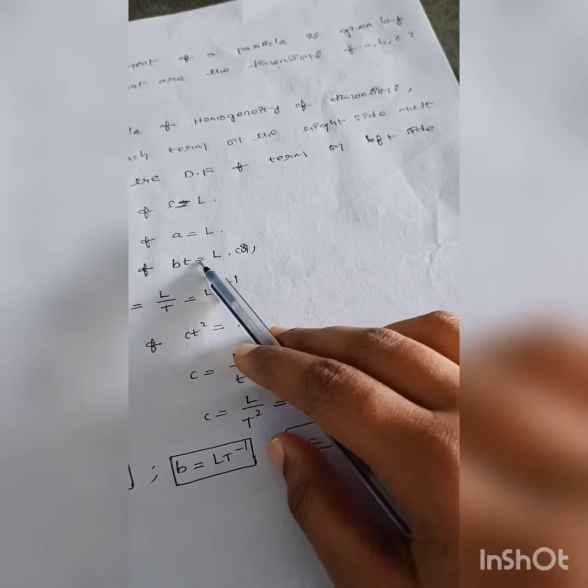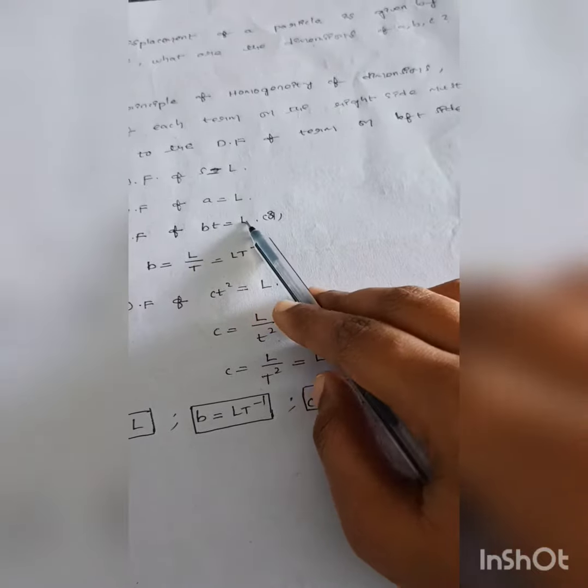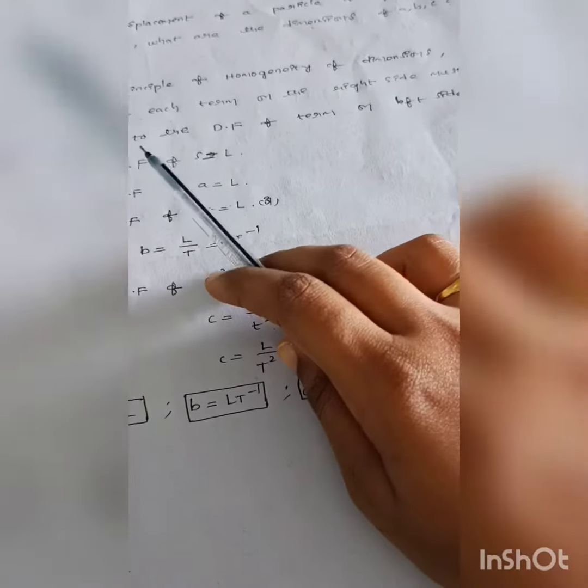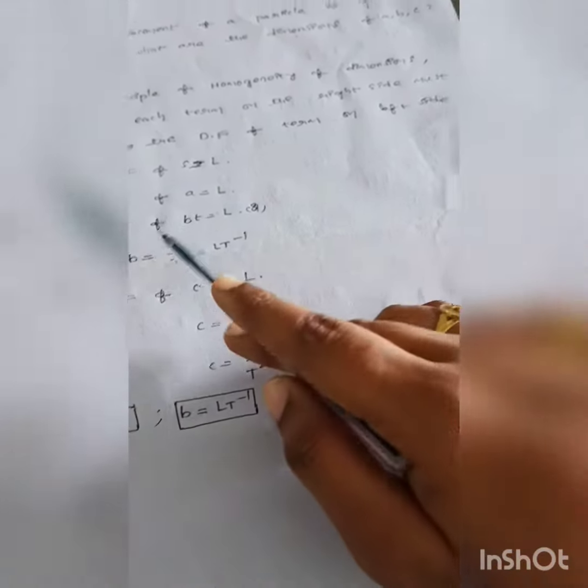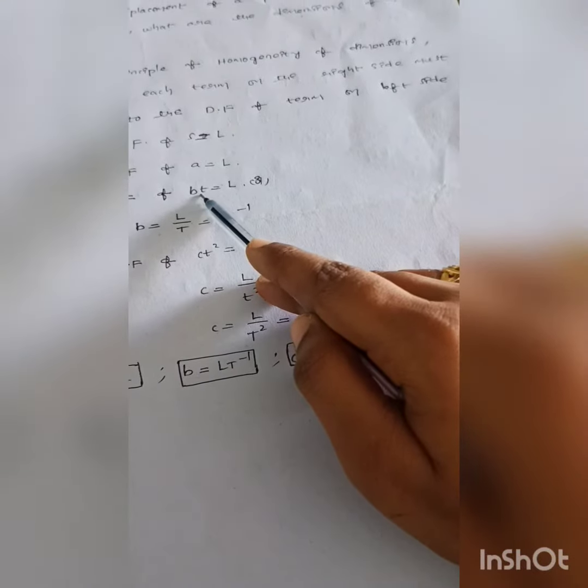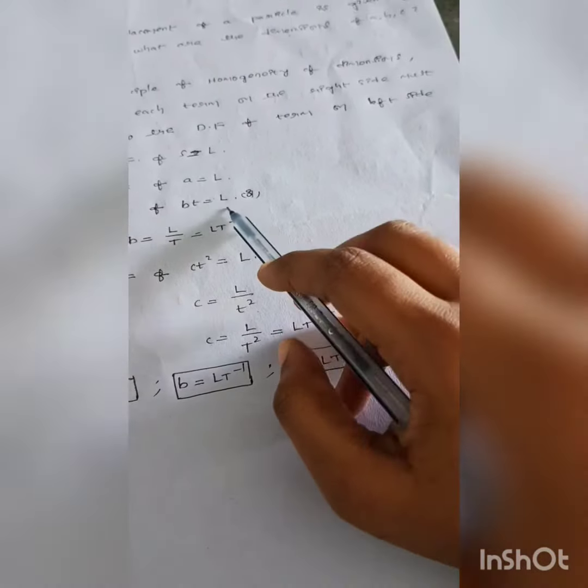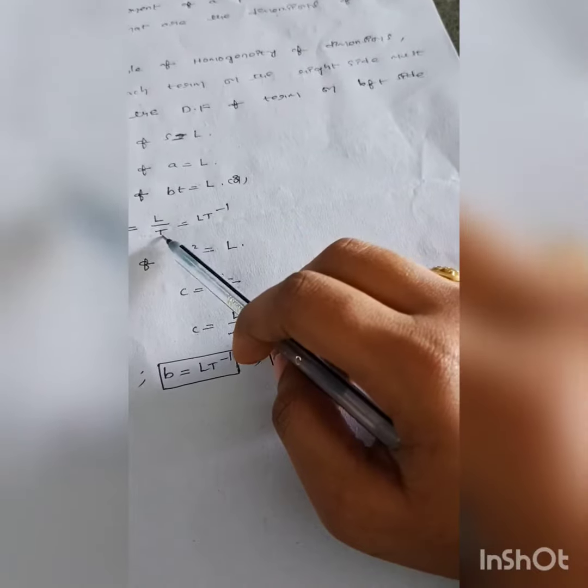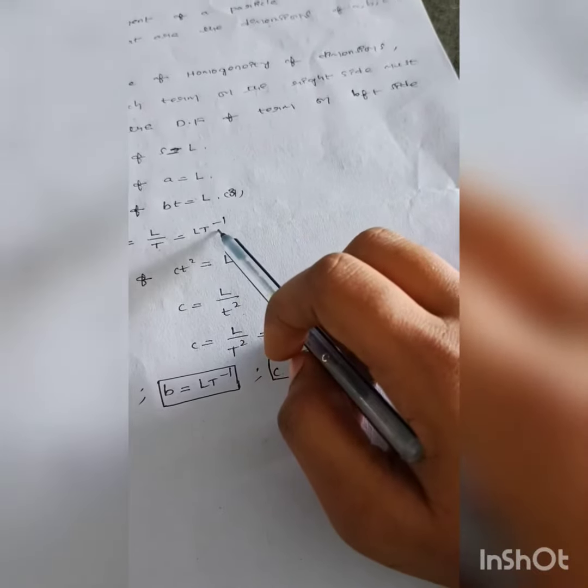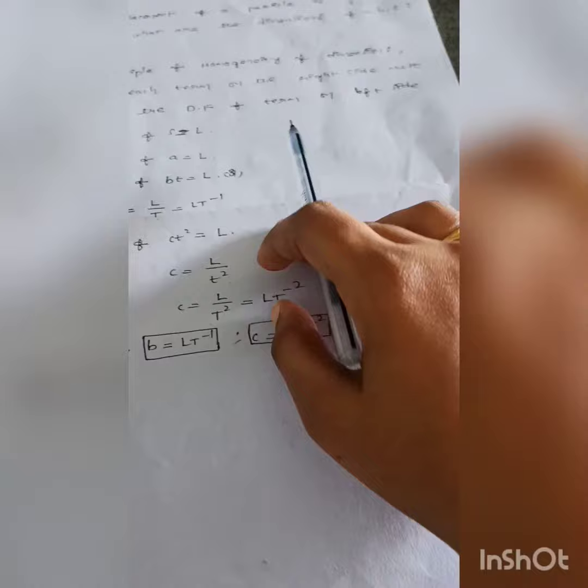Dimensional formula of bt must be equal to L. bt is equal to L. Therefore, b is equal to L by t, which equals t to the power minus 1, L t to the power minus 1.